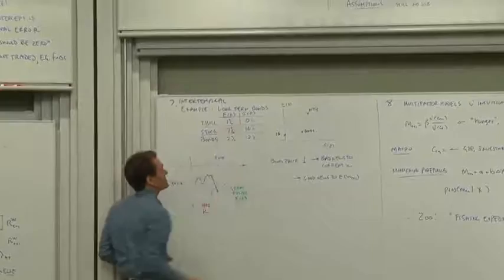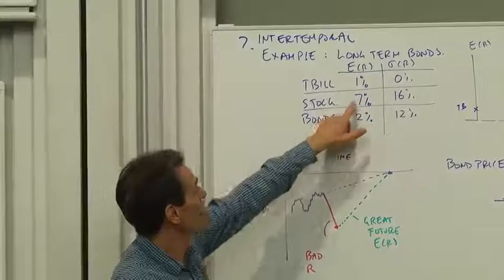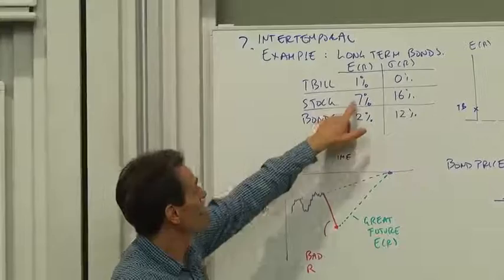Let's look at the expected returns and the standard deviation of returns at a one-year horizon. By a one-year T-bill, you might get on average about one percent with a standard deviation of zero. It's risk-free. If you look at stocks, you might get a seven percent mean with about a 16 percent standard deviation. That's a Sharpe ratio of a half, pretty good.